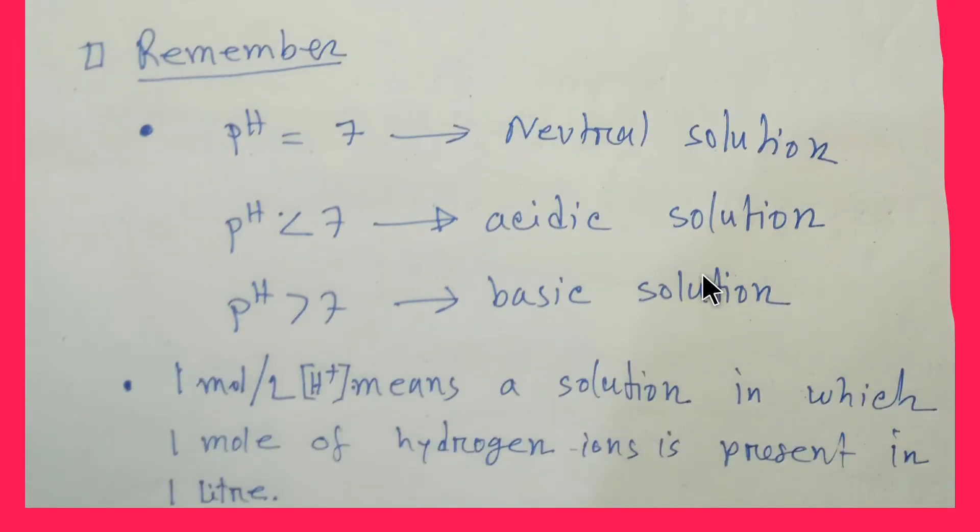What do you mean by 1 mole per liter hydrogen ion? This means a solution in which 1 mole of hydrogen ion is present in 1 liter.